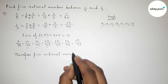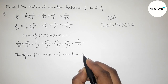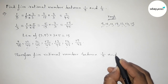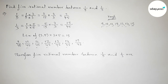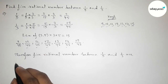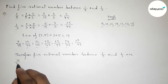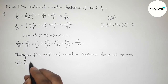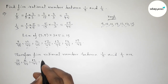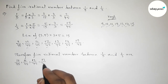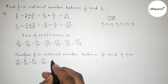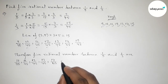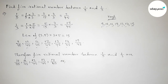Therefore, the five rational numbers between 1/5 and 1/3 are: 10/45, 11/45, 12/45, 13/45, and 14/45.